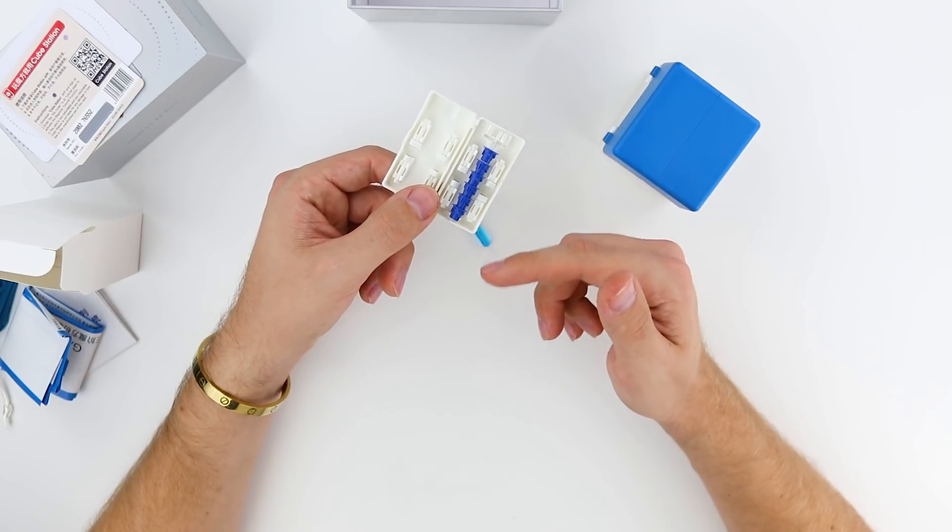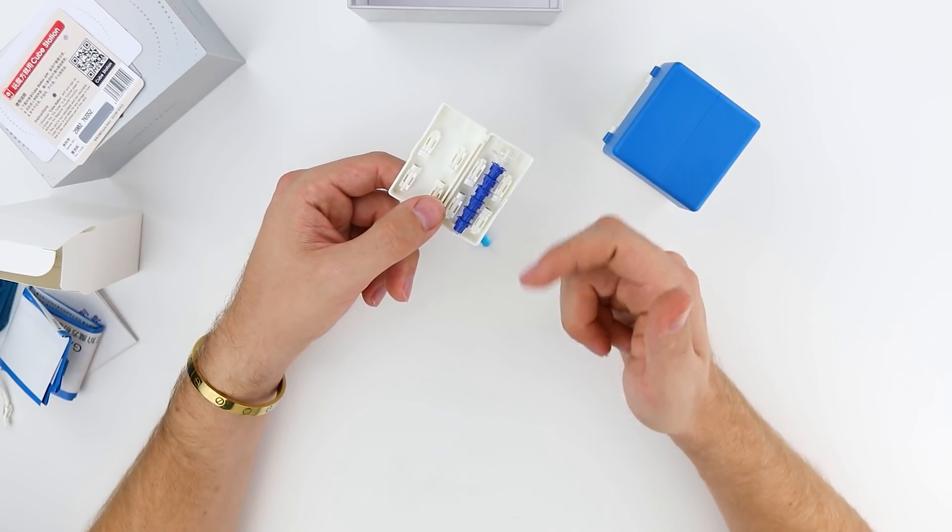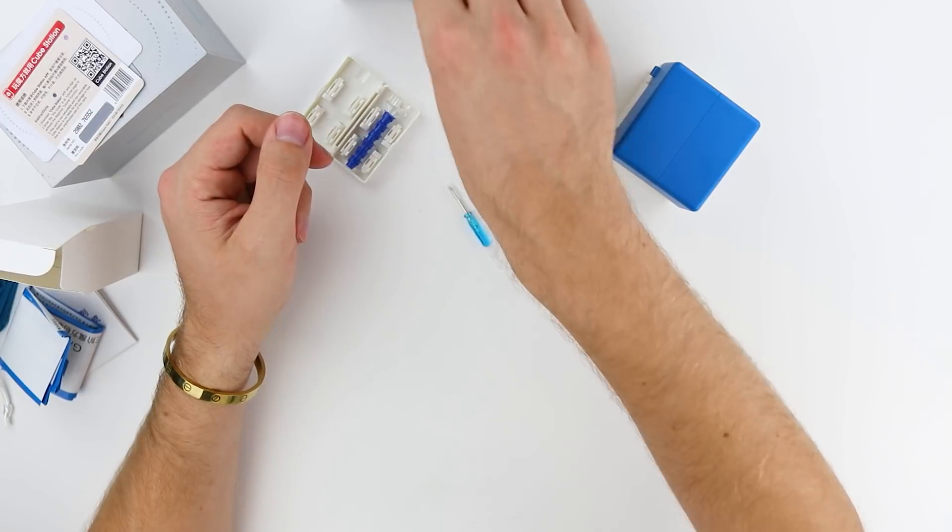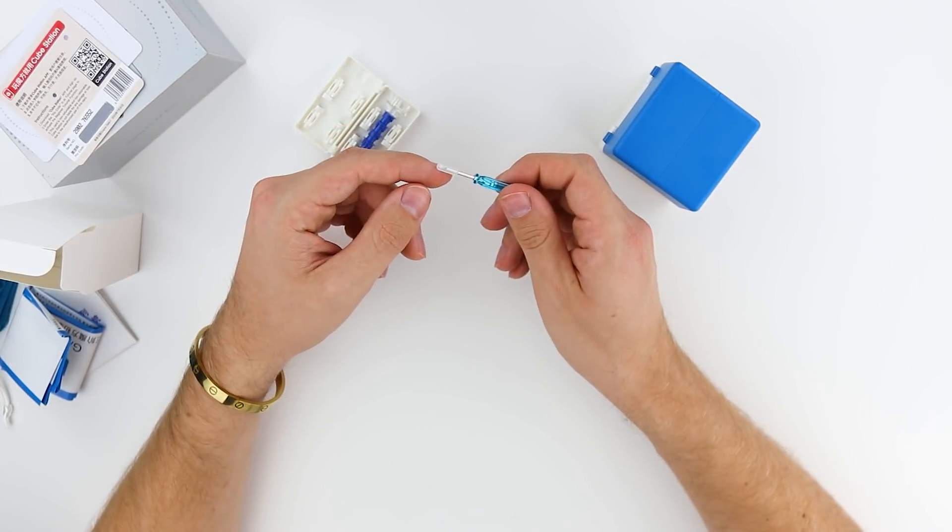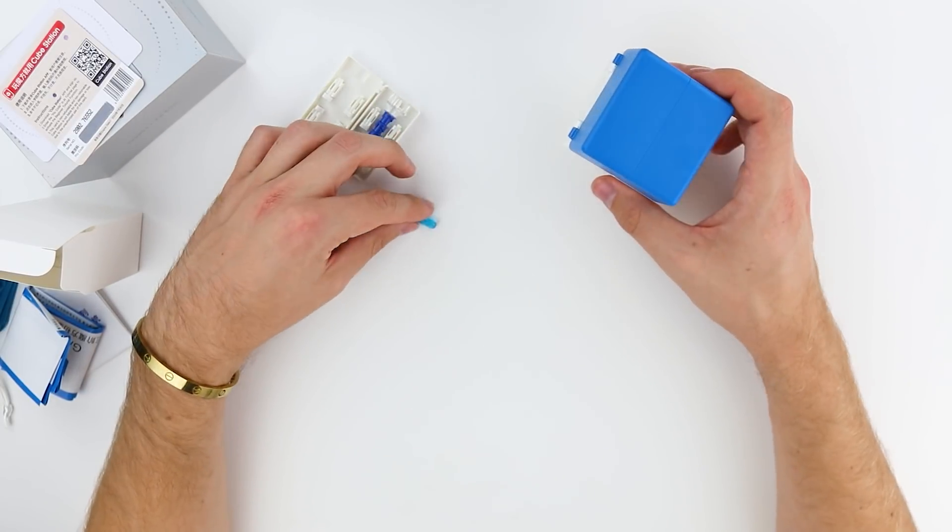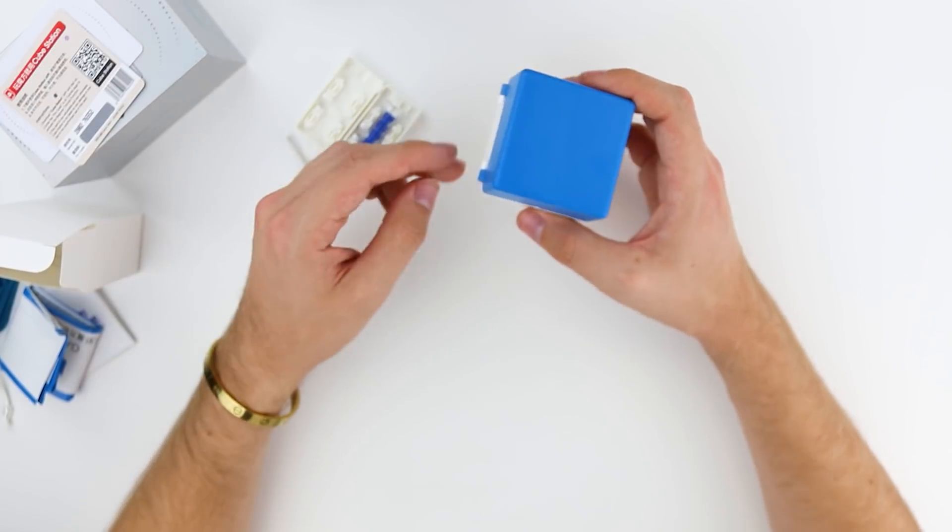Then we have the dark blue distance travel nuts and the adjustment tool for the core. I presume this flathead is going to be used to adjust the edge magnets. So I'll show you how that works.